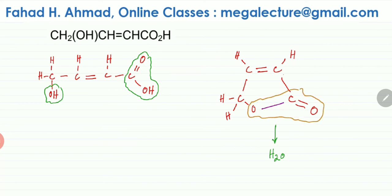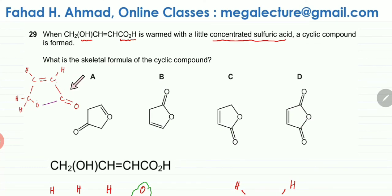Here you can clearly see the ester link — C double bond O and O. Now let's compare with the four answer molecules drawn above. Option A is not correct because it doesn't have an ester link. The C double bond O is present, but right next to it there is no single O directly attached. So we eliminate option A.